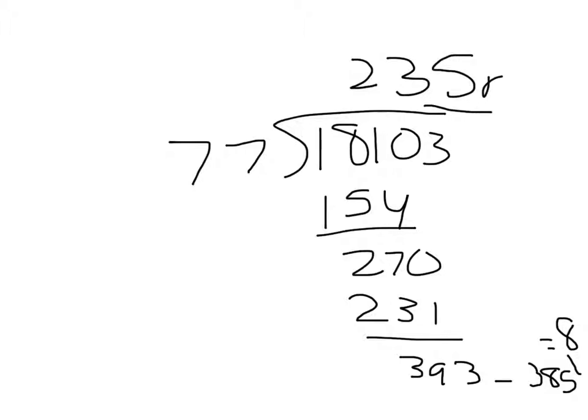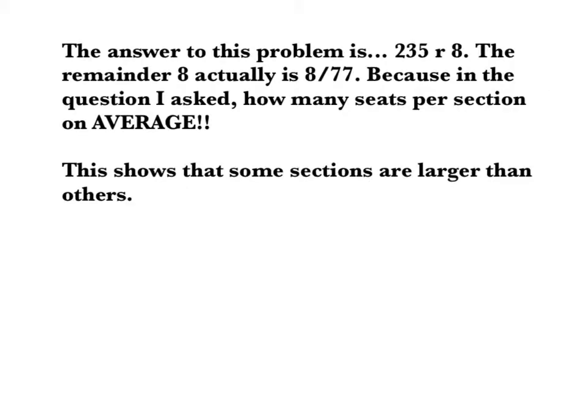So, remainder 8. The answer to this problem is 235 remainder 8. The remainder 8 actually represents 8 out of 77, because in the question I asked how many seats per section on average — this shows that some sections in the stadium are larger than others.